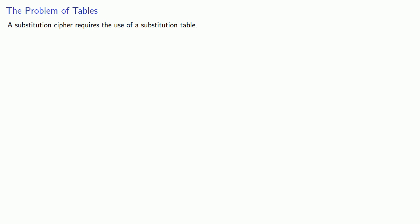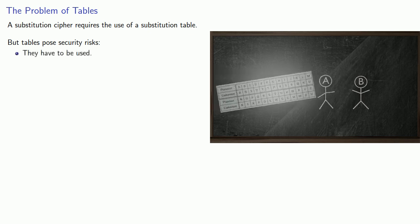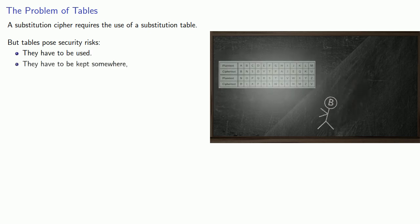The problem is this: a substitution cipher requires the use of a substitution table, but tables pose security risks. They have to be used and kept someplace, so it's possible for Eve to get in and find that substitution table.